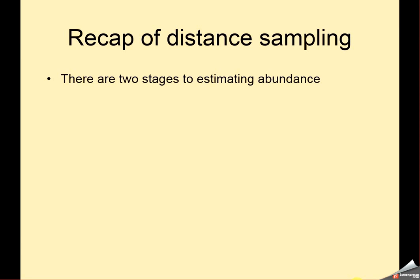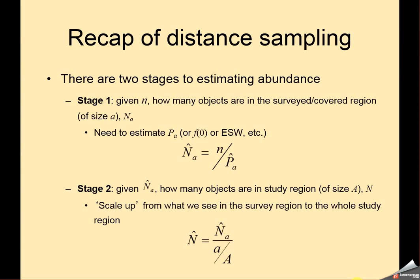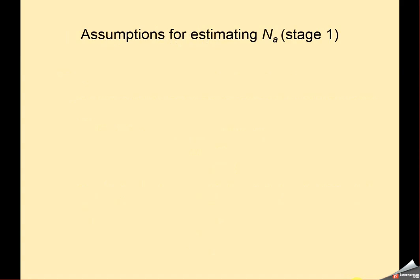We've talked about distance sampling being a two-stage method, so there are assumptions attached to each of those stages. The first stage was to try to estimate the number of objects inside a covered region, that's what we termed n sub a with the hat on it. The trick associated with estimating n sub a is to estimate p sub a. Having an estimate of n sub a, we need to figure out how to scale up from the portions of the study area that we sampled to the portions that we did not sample, and that is the conversion from n sub a to n hat without the a.